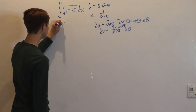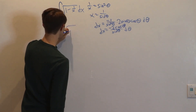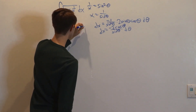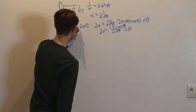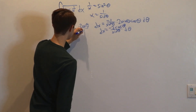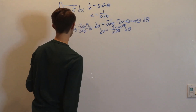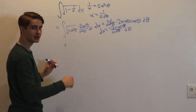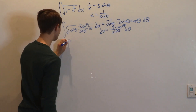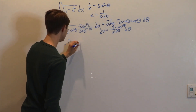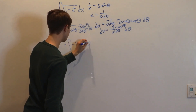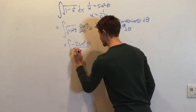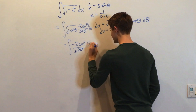Now we can plug all this information into our integral. We get the integral of the square root of 1 minus sine squared theta, times dx which becomes negative 2 cosine theta over sine cubed theta dθ. The square root of 1 minus sine squared theta is just cosine theta, so this becomes the integral of negative 2 cosine squared theta divided by sine cubed theta dθ.